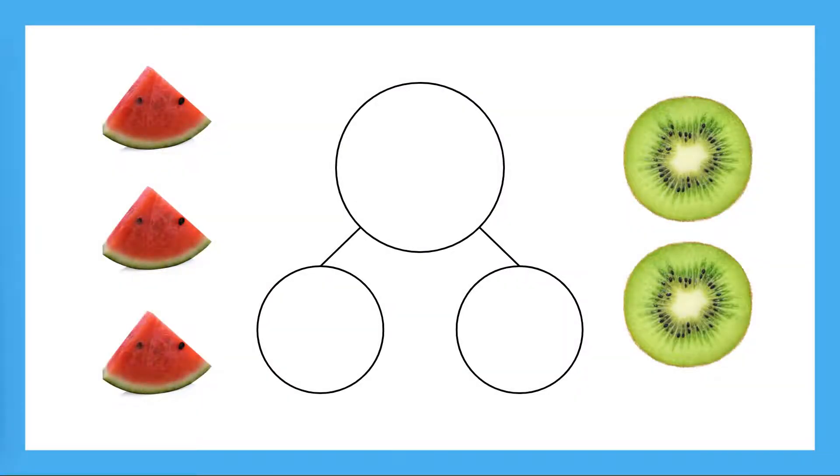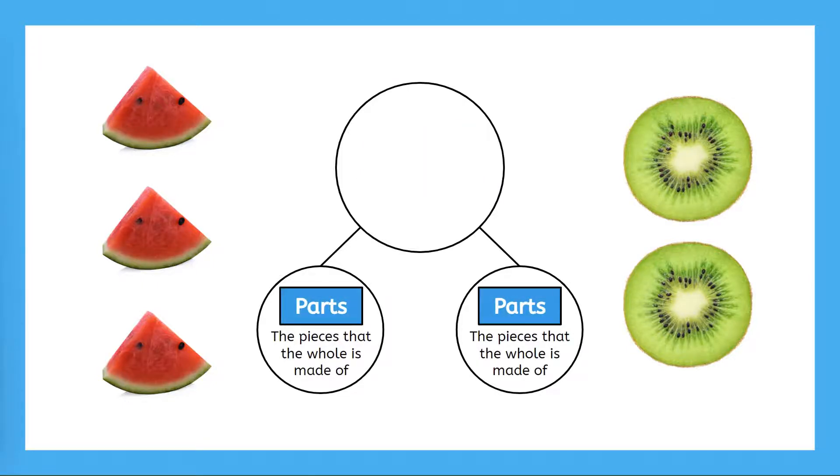In our last lesson, we learned how to think about a number as a whole made of parts. The whole tells us how many there are in all. The parts are the smaller pieces that the whole is made of.